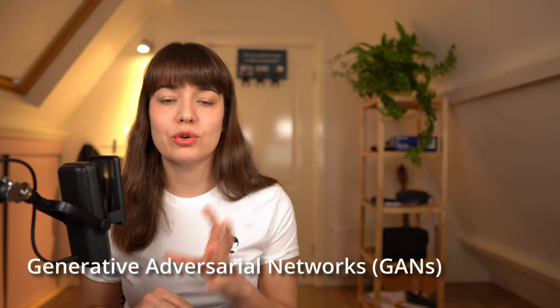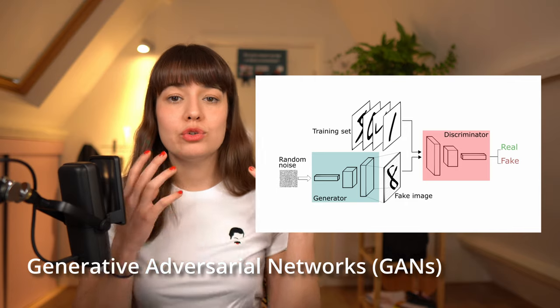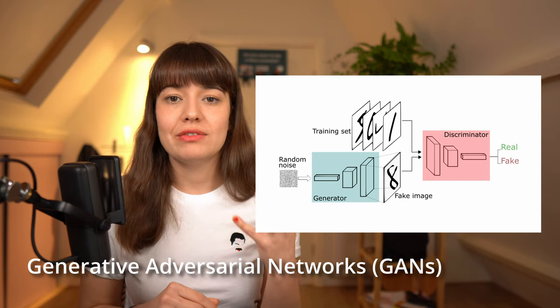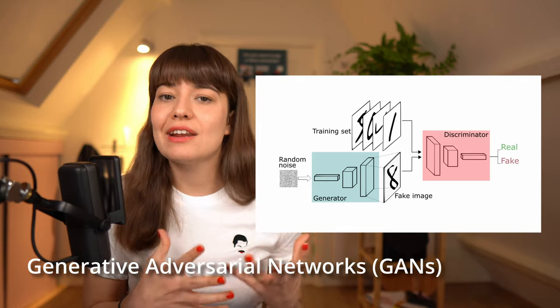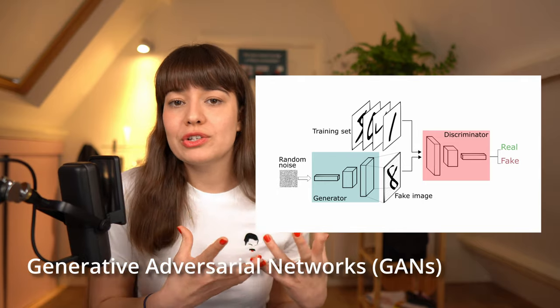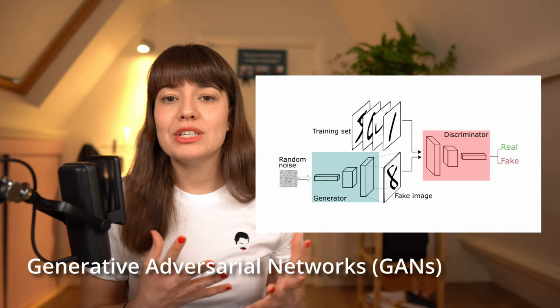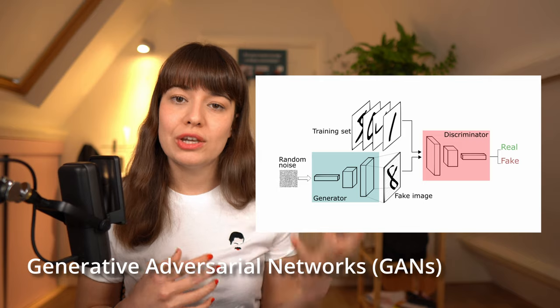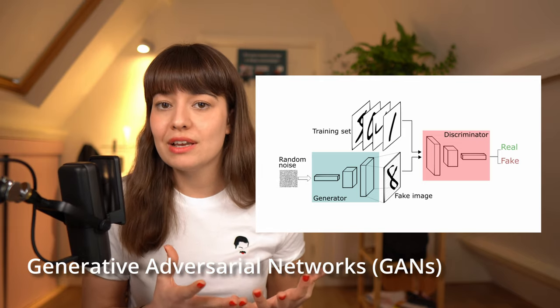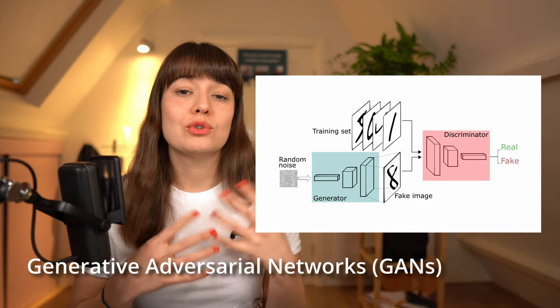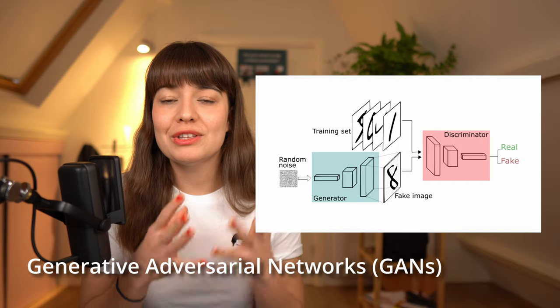Then you have generative adversarial networks, or GANs for short. With GANs you have two networks competing against each other. The generative network's goal is to create realistic data samples, and the discriminative network's goal is to determine whether its input is fake or real. As you train this more and more, the generative network gets better at creating realistic samples and the discriminative network gets better at catching the fakes. This architecture is used a lot to create realistic data from scratch. Let me know in the comments if you want to learn more about GANs or autoencoders and I'll make a separate video about those.